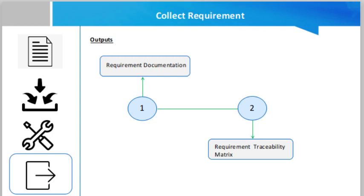The outputs of collect requirements are requirement documentation and requirement traceability matrix. Requirement documentation describes how individual requirements meet the business need for the project. Requirements may start out at a high level and become progressively more detailed as more information about the requirements is known.